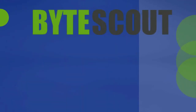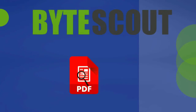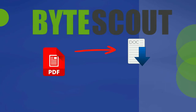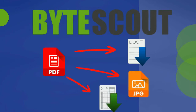ByteScout PDF Extractor SDK. Extract text from PDF. PDF Extractor SDK allows developers to convert PDF to text, extract images from PDF, convert PDF to CSV for Excel, PDF to XML, and works without any additional software required.